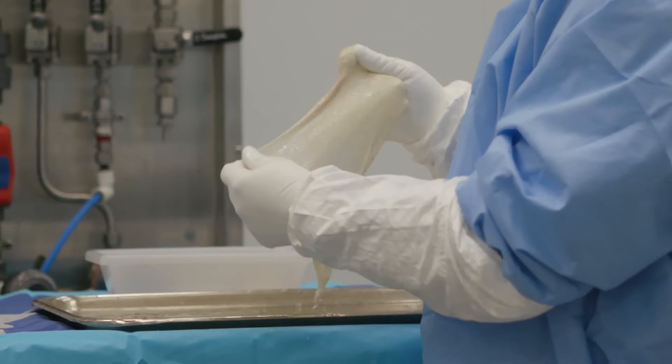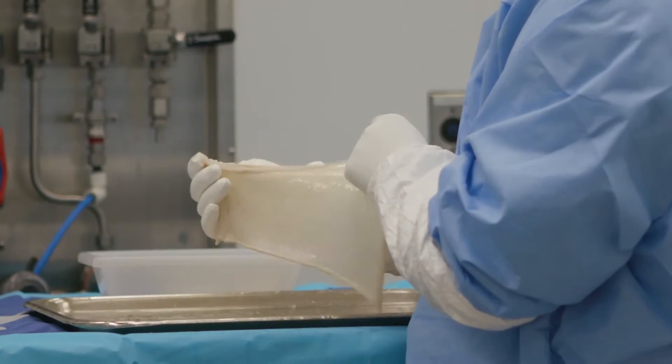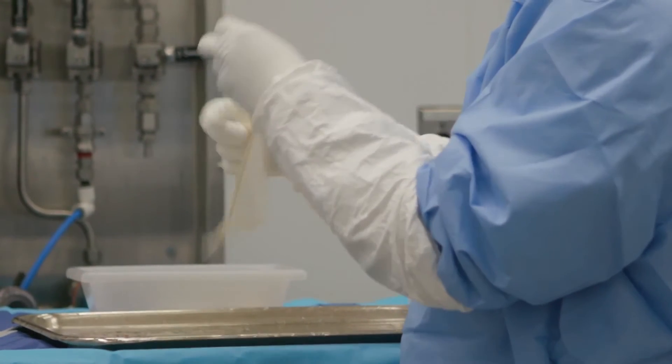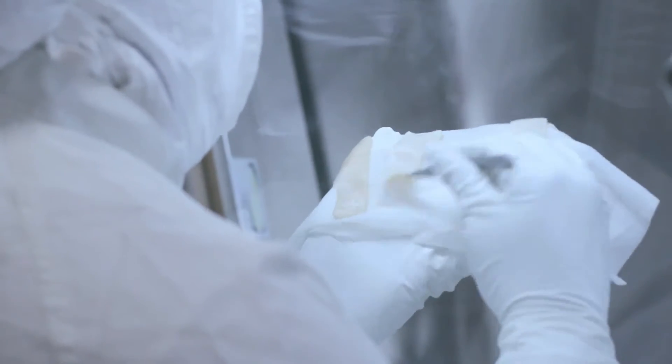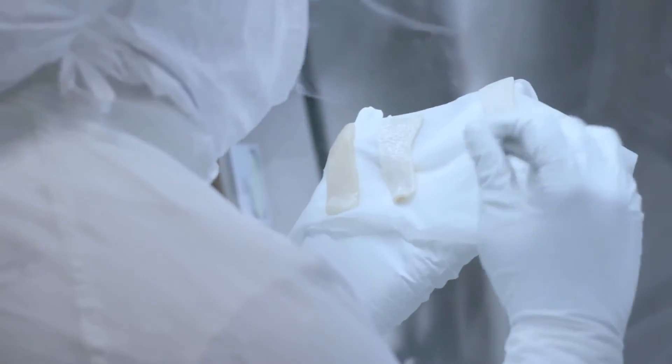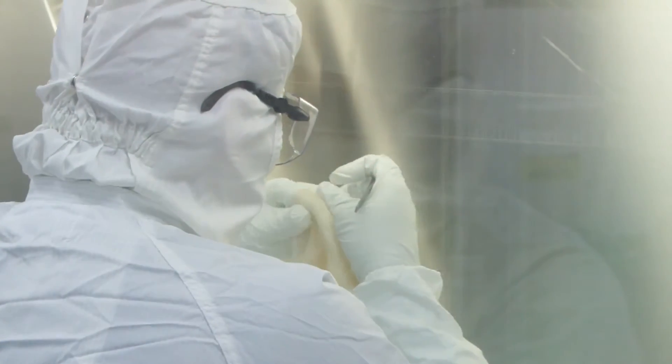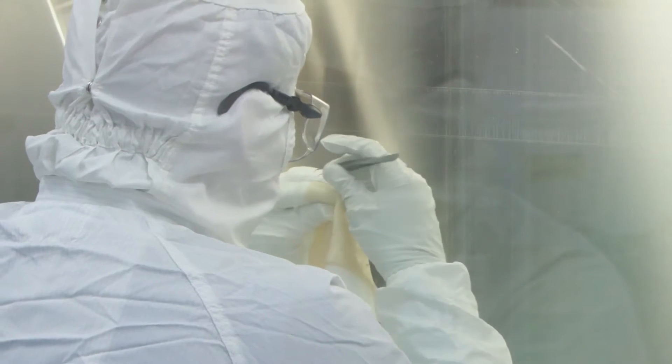The tissue is now ready to be cut into its final shape using a specialized die cutting technique. Final visual inspection is performed on every piece to ensure it meets our high quality standards. For instance, any remaining hair is manually removed at this stage.